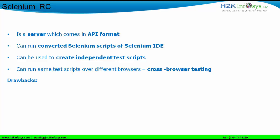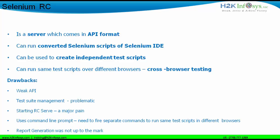Moving on, we will see some drawbacks of RC. The first drawback is a weak API. What does weak API mean? It precisely means that the number of classes, methods, and interfaces present in Selenium RC was less. If you have fewer classes, methods, or interfaces in an API, the coding structure becomes complex and we have to write a lot of code. People coming from a manual testing background or doing automation for the first time find it difficult to use Selenium RC, and that is why it was considered a weak API.